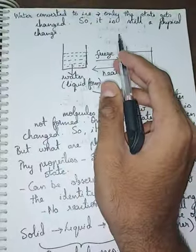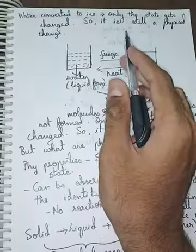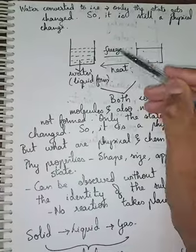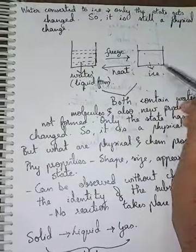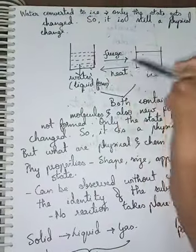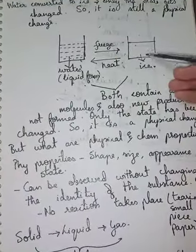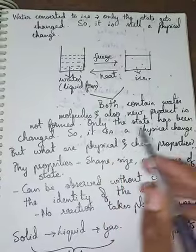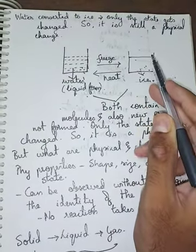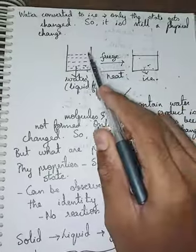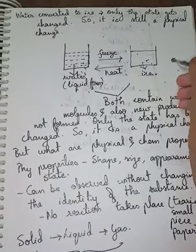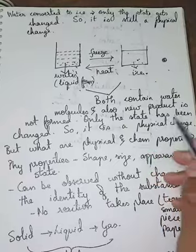Consider the example of water converted to ice — only the state gets changed, so it is still a physical change. If you freeze water it becomes ice, and if you heat ice it becomes water. Here the water is in liquid form and ice is in solid form; only the states have been changed. The water molecules are the same in both ice and water, and no new product is formed.